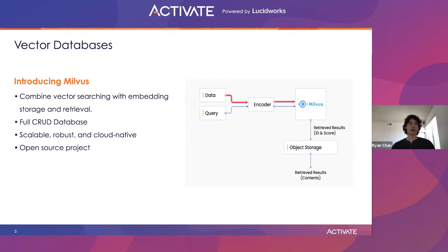Seeing all these very common requirements, we built Milvus, which is what we like to call a vector database. We combine vector searching with embedding storage and retrieval, all designed in a distributed fashion for scalability and robustness.